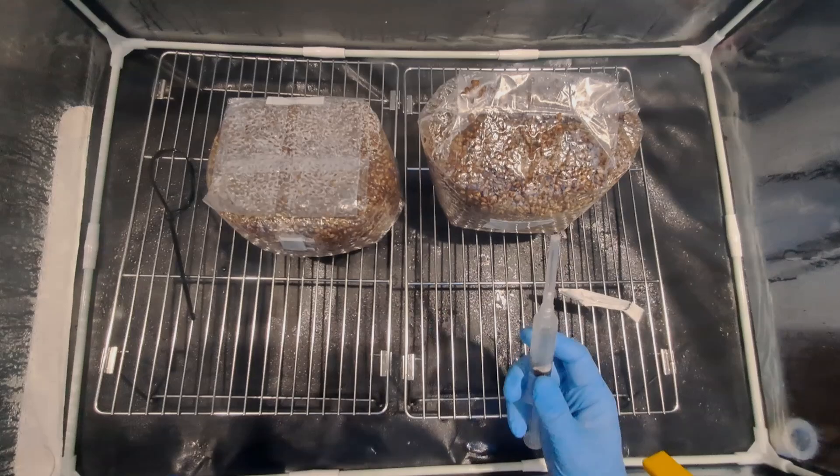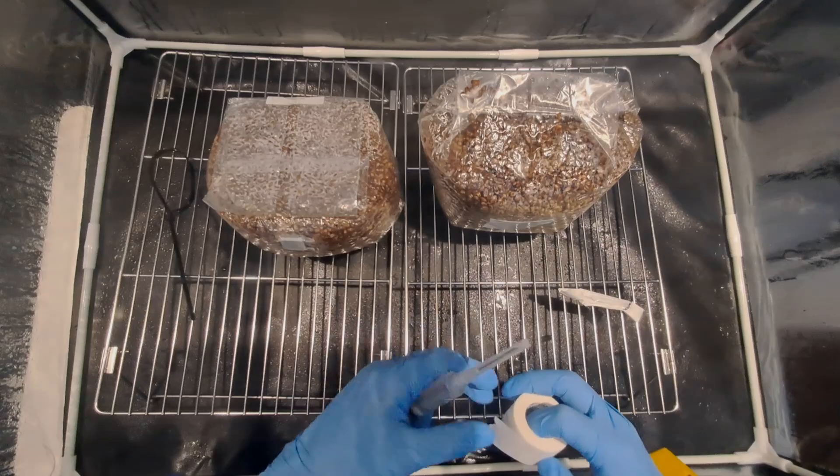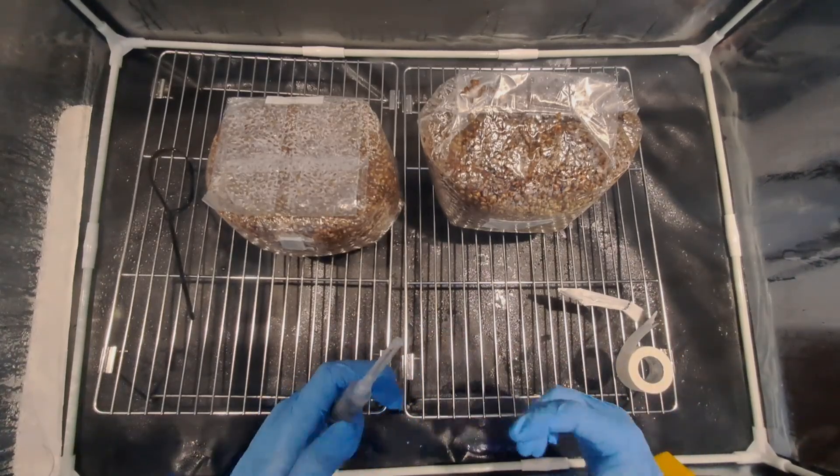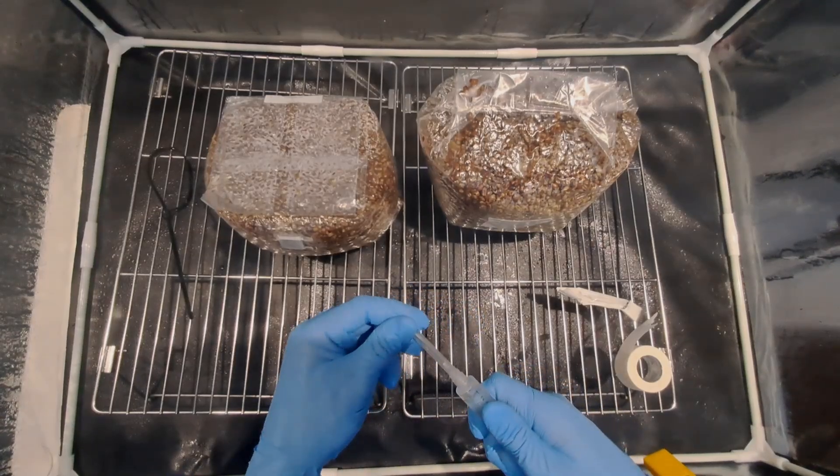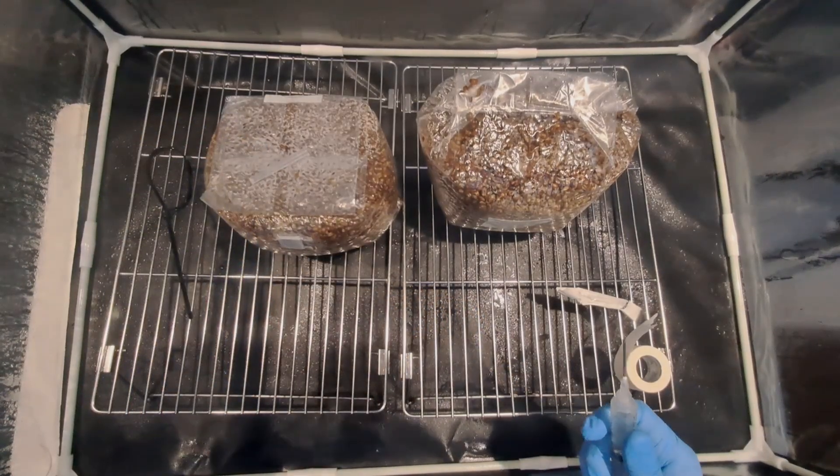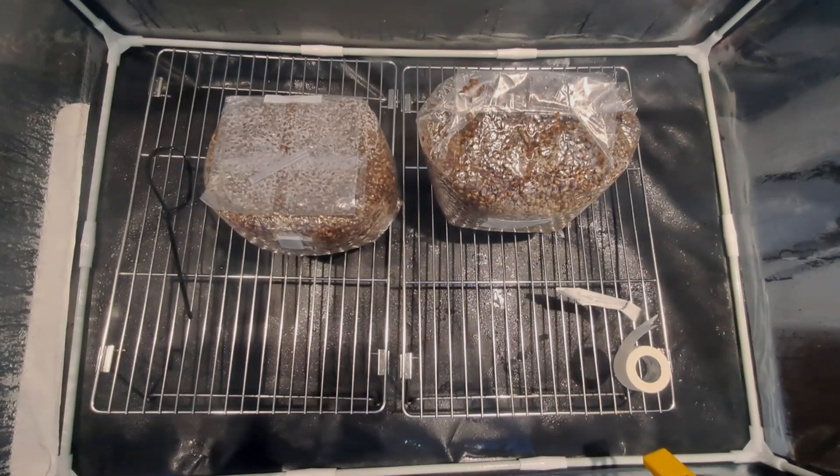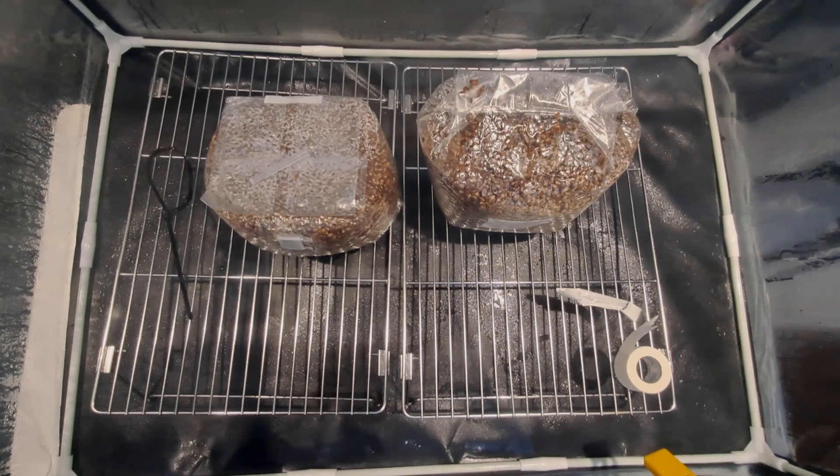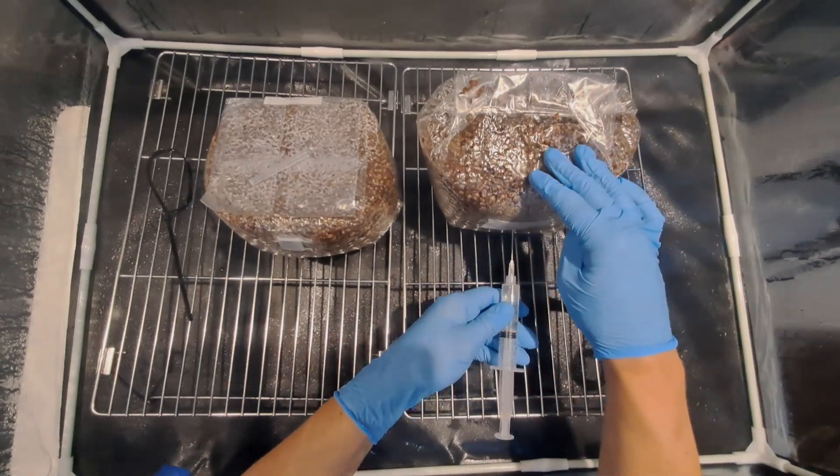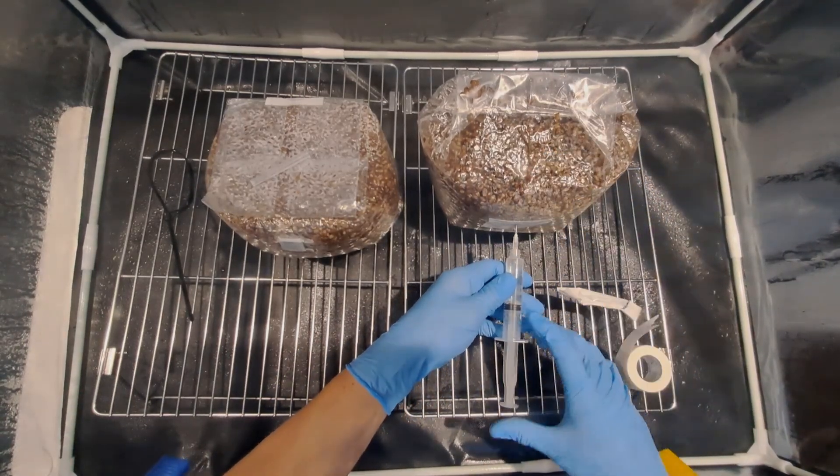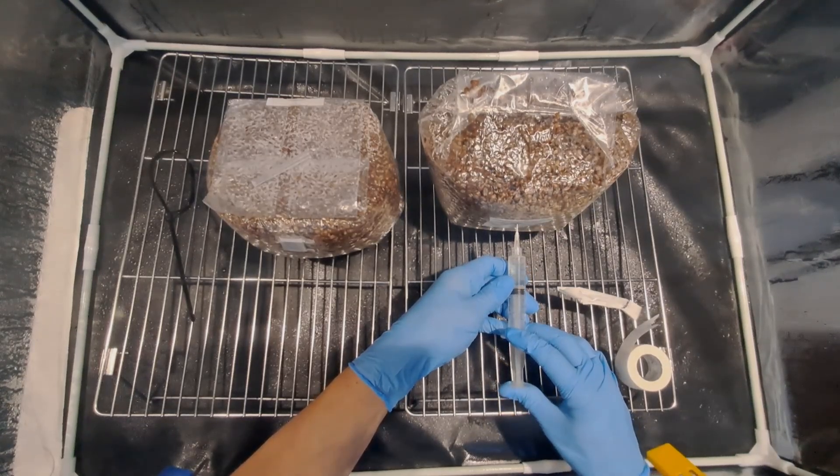I've prepared the micropore tape to close up the hole after inoculation so putting that within reach. Flame sterilize my syringe outside the still air box. While the syringe is still glowing red I'm going to return it to the still air box and inject through the micropore tape. When I remove the needle I'm then going to cover up the hole with a second layer of micropore tape.